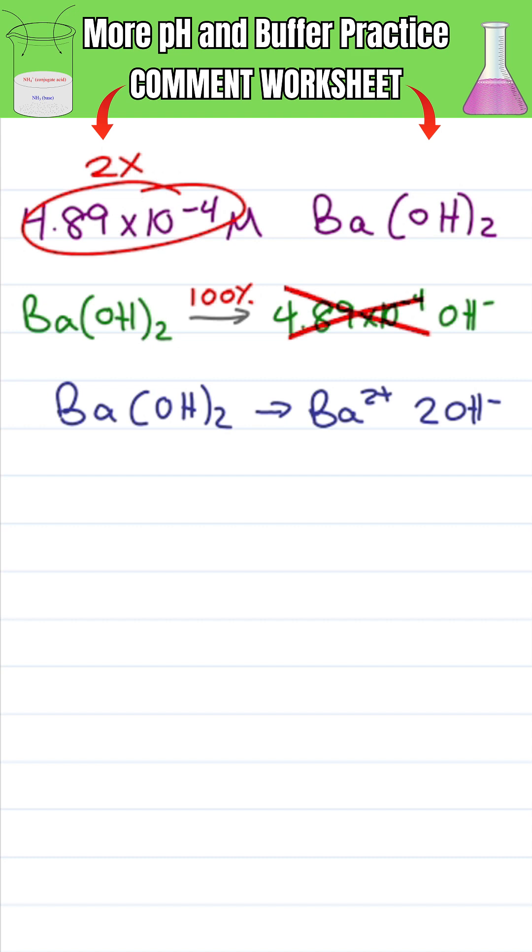And since we're doing this without a calculator, we'll go with close enough is good enough. We'll use an initial concentration of about 5 times 10 to the minus 4.